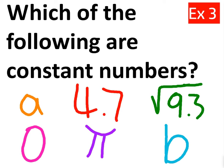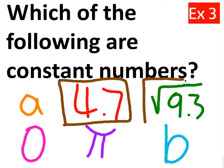Which of the following are constant numbers? Well, a is not a constant number. It can change. And when I think of a, I think of any number. So a is not a constant number. 4.7, though, is constant. We're going to go ahead and square that off. Square root of 9.3 doesn't change. Even though it's not a whole number, it still doesn't change. It's a fixed number. 0 is a fixed number.